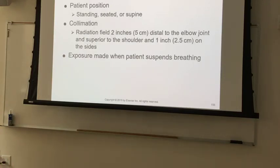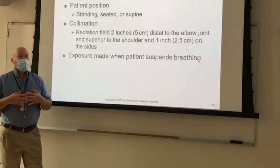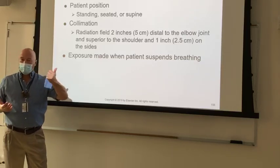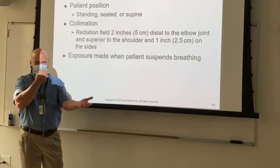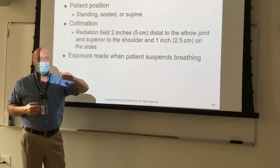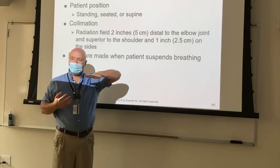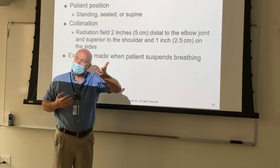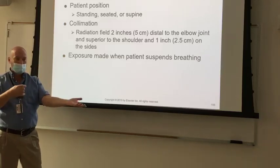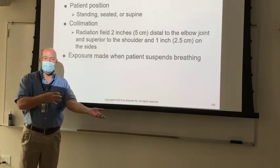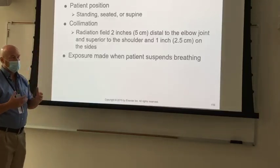Some hospitals will request a radial head series — four different lateral views with the hand in different stages of rotation: thumb side down, pronated, thumb side up, and as supinated as the patient can go. Because rotation occurs at the radial head, this gives four different views of the radial head at different levels of rotation. You can't do this in AP because of the superimposition over the ulna.